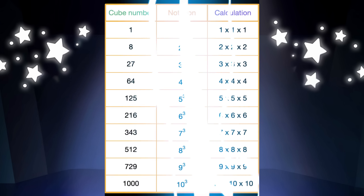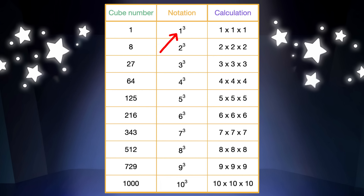And now let's check out some more examples of cube numbers. Here is the cube number, the notation, and its calculation. Let's start with one. It is one cube, or one times one times one.